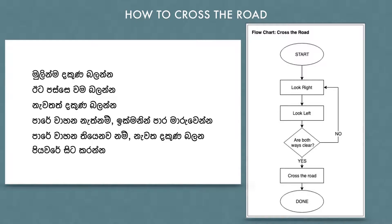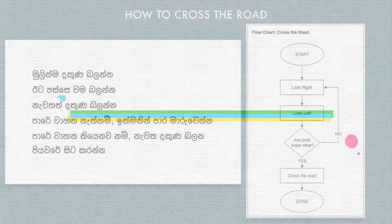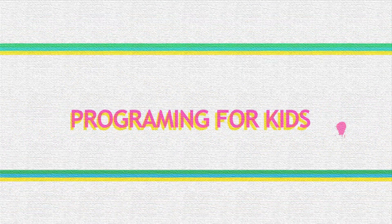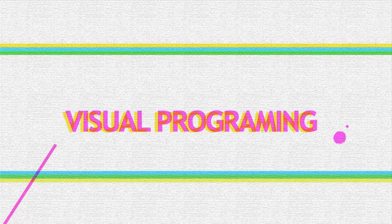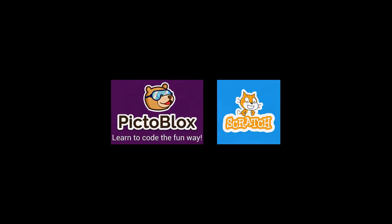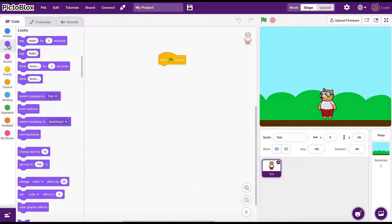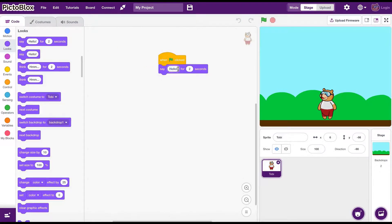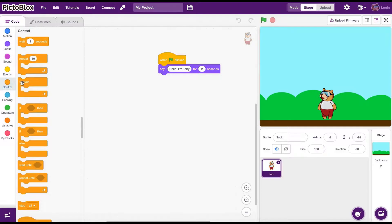It's exactly like this when it comes to computers too. We need to tell clearly each step it must follow to do our task. With visual programming tools like Scratch and PictoBlox, it's much easier for kids like us to do programming and build very cool stuff like games and interactive animations. All we have to do is drag and drop the instruction blocks and build the program we need — just like solving a puzzle.